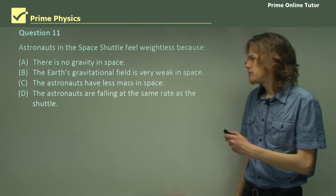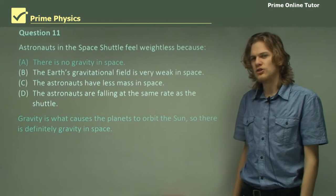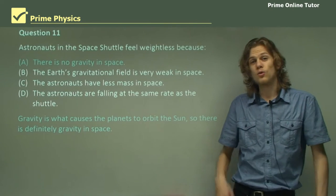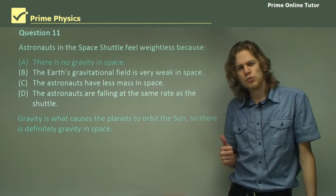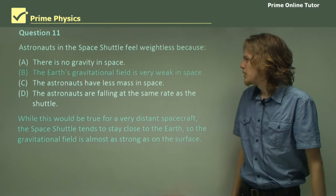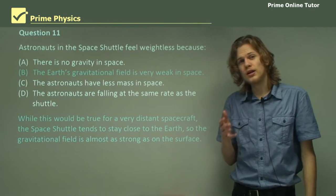So let's go through our options. There is no gravity in space. Completely wrong. There is gravity in space. It's what causes the planets to stay in orbit. It's what causes the space shuttle to stay in orbit around the Earth. B says the Earth's gravitational field is very weak in space.